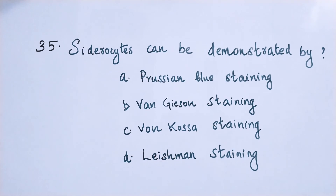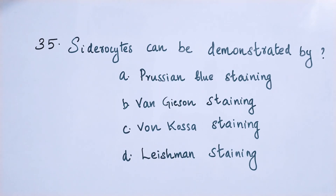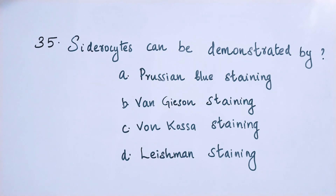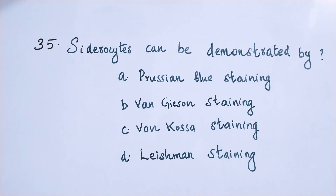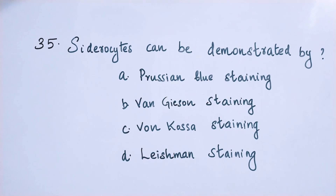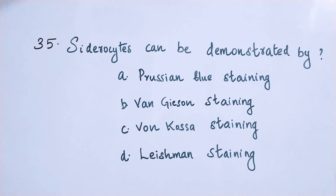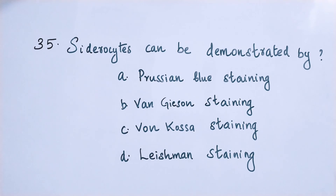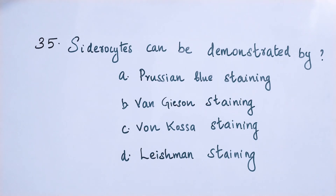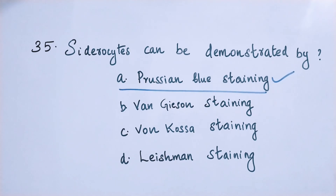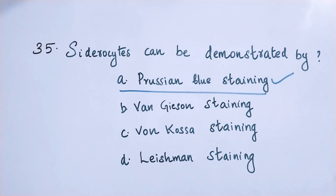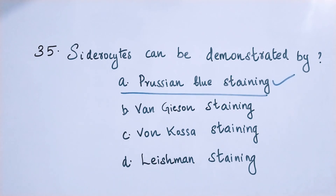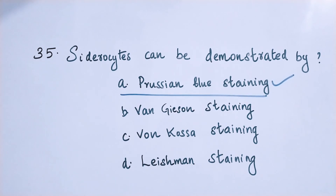Question number 35: Siderocytes can be demonstrated by option A: Prussian blue staining, option B: Van Gieson staining, option C: Vancosa staining, option D: Leishman staining. The right answer is option A — Prussian blue staining. Siderocytes can be demonstrated by Prussian blue staining.